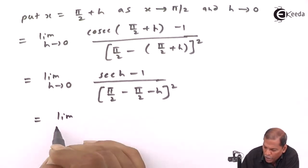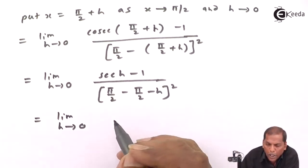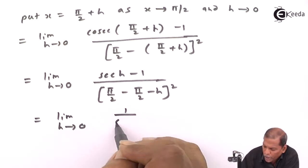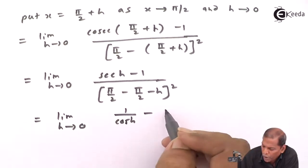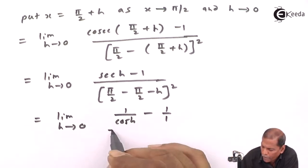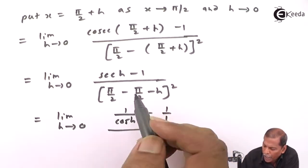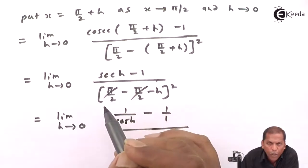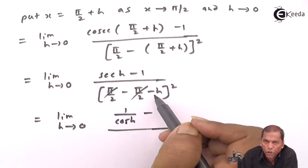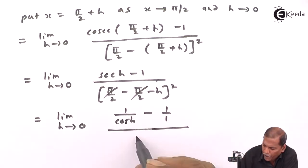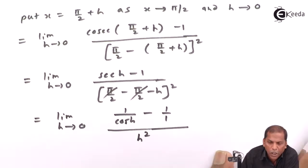Now sec h can be written as 1/cos h, so we get (1/cos h) - 1 in the numerator, upon h². After cross-multiplying, the numerator becomes (1 - cos h)/cos h, and the denominator is h².